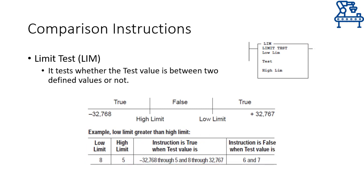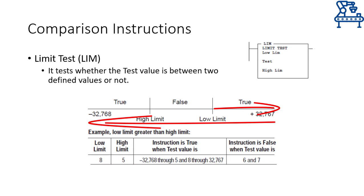The working hasn't changed — the true value is returned for all test values moving from the low limit to the high limit. In this case, starting from the low limit, we reach the maximum value of 32,767, wrap down to the minimum of negative 32,768, and keep moving until we reach the high limit. All values traversed while moving from the low limit to the high limit return true; all other values return false.